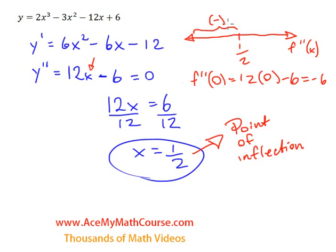So the double derivative to the left of half, of x equals half, is negative, which means that there, in this area, or rather to the left of half, the graph is concave down.